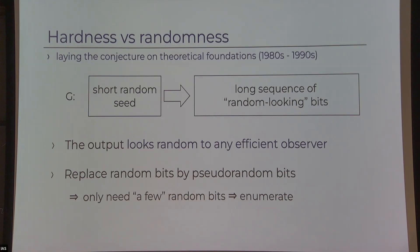The modern definition of PRGs — pseudorandom generators — are algorithms that take a short random seed and stretch it to a long sequence of bits. The crux is that the output should look random to any efficient observer — not just some subset of statistical tests, but any possible efficient observer can't distinguish it from truly random. This allows us to replace random bits in any algorithm, because the algorithm is efficient and cannot tell the difference. By this, we shrink the number of truly random bits needed from long to short.